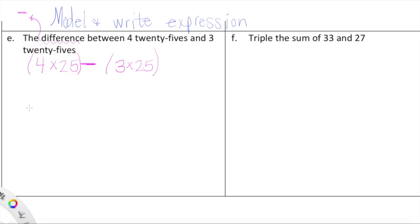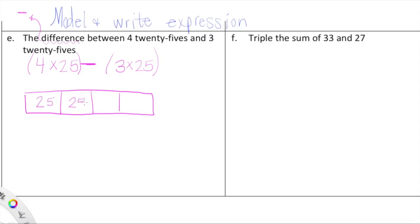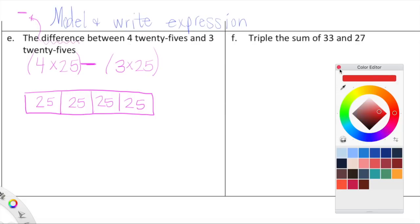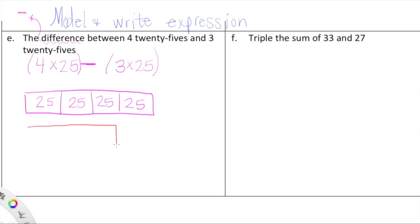To model this, we are going to compare two rectangles. The first one represents four 25s — I have one, two, three, four sections labeled 25. Then we compare that to three 25s — one, two, three. We're looking for the difference between these, so I draw a bracket with a question mark. The difference lies in the blank space — that is represented by the question mark.